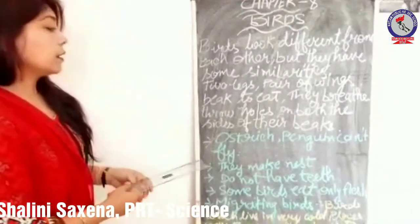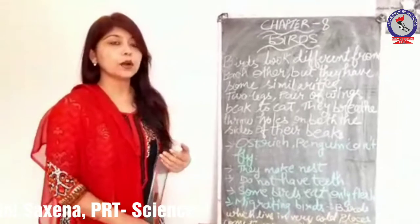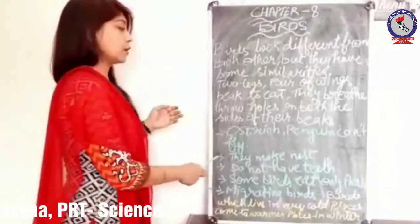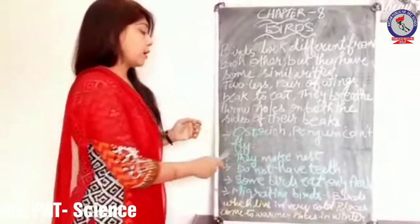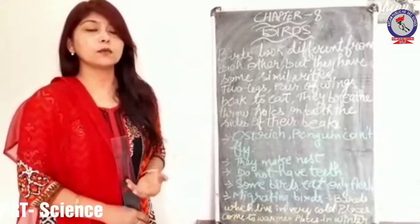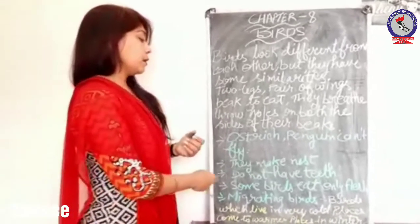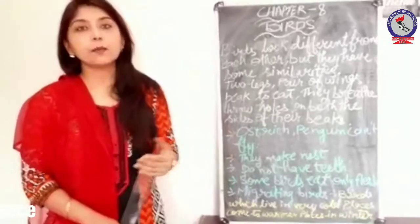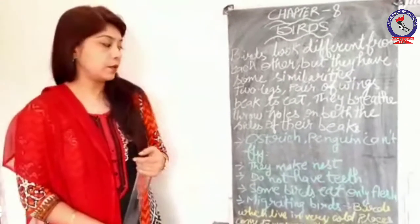There are some birds that cannot fly, but they are still birds — like the ostrich, penguin, and kiwi. They cannot fly because they are very heavy in weight. Most birds make their nests with the help of twigs, leaves, grass, and so on.